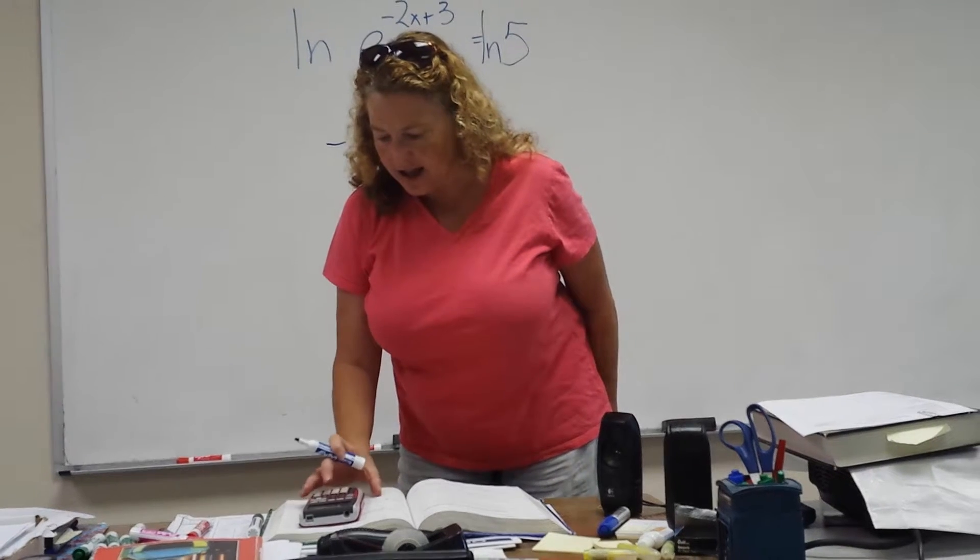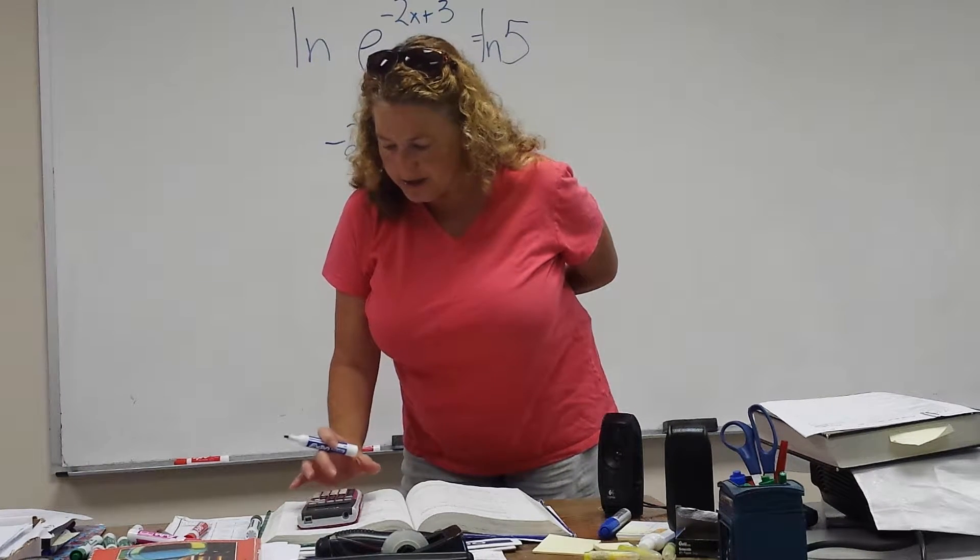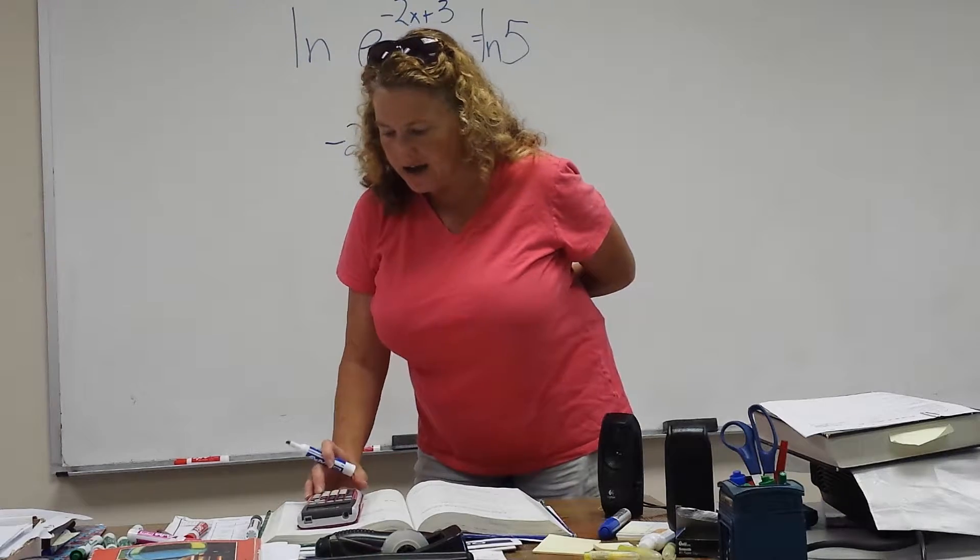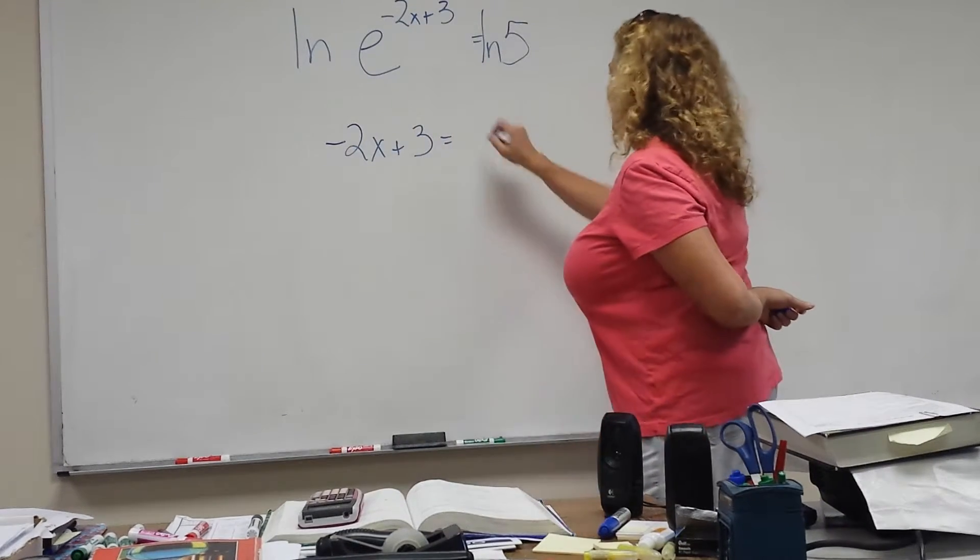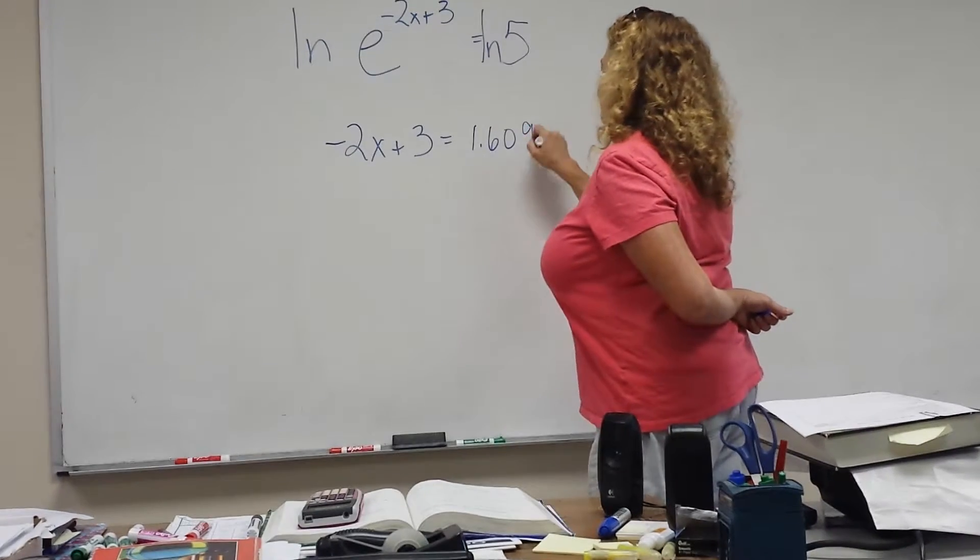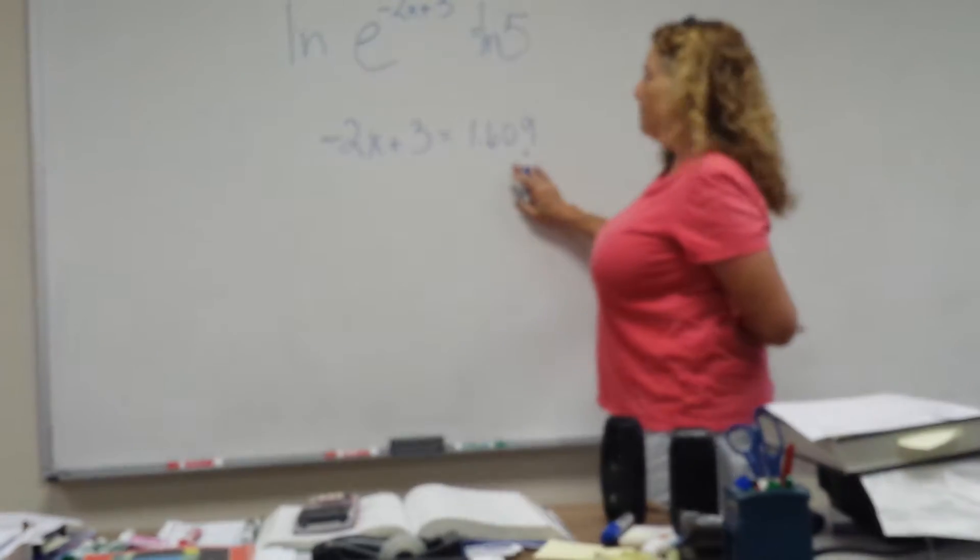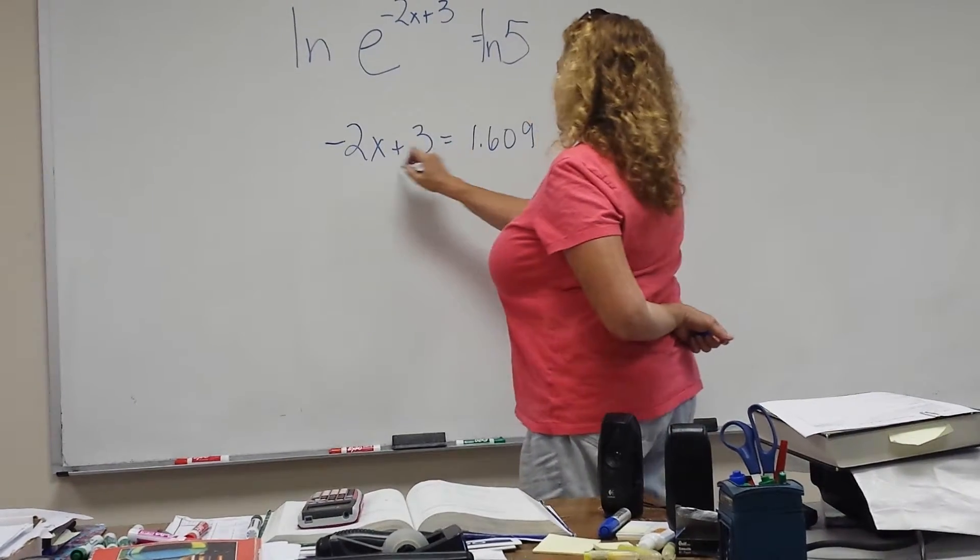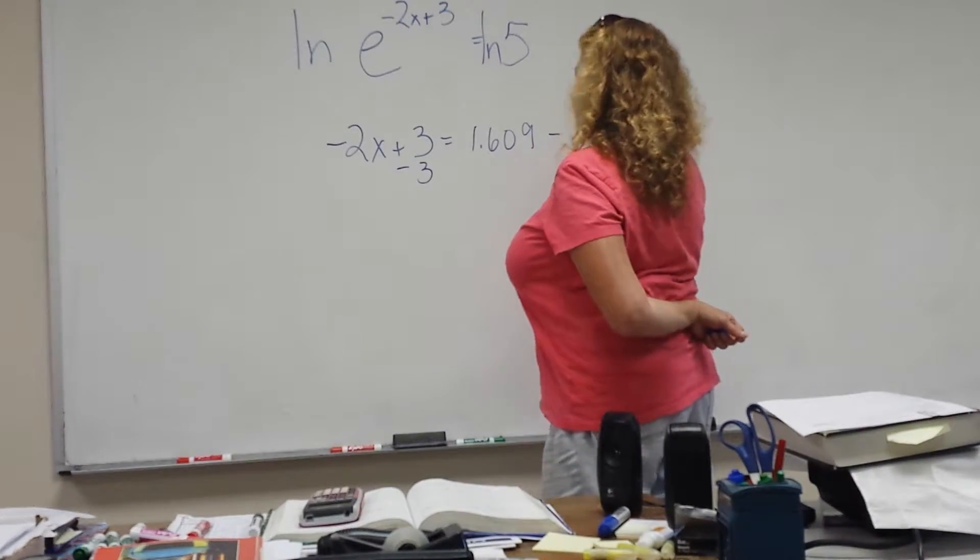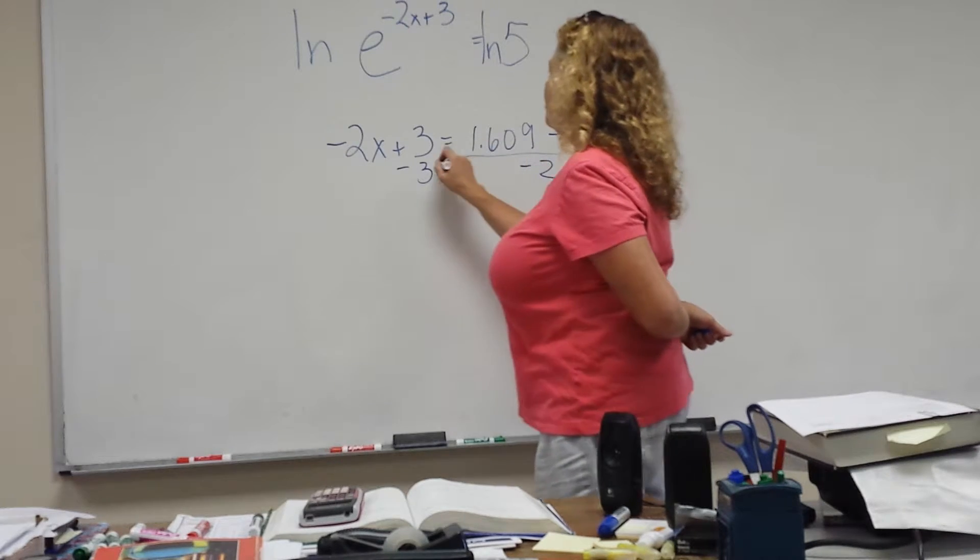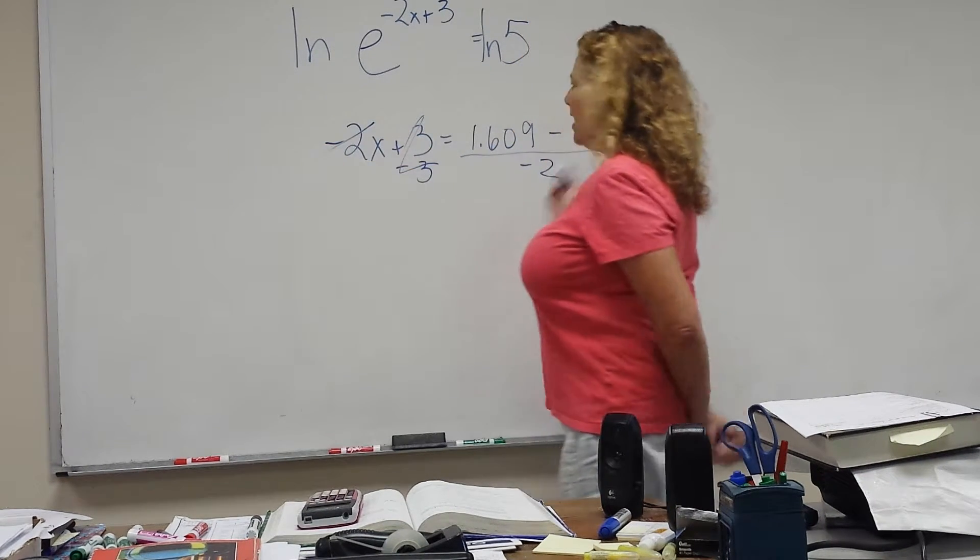So you would hit ln 5 and it gets 1.609, which makes sense. Okay? So now you would just subtract 3 from both sides and then divide by negative 2. And that will give you x.